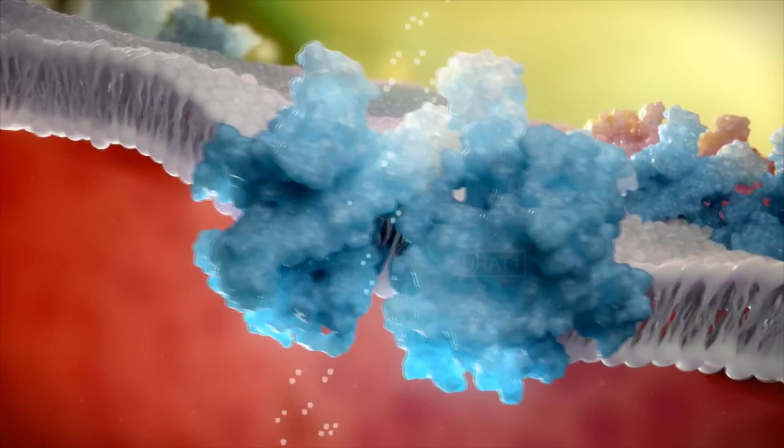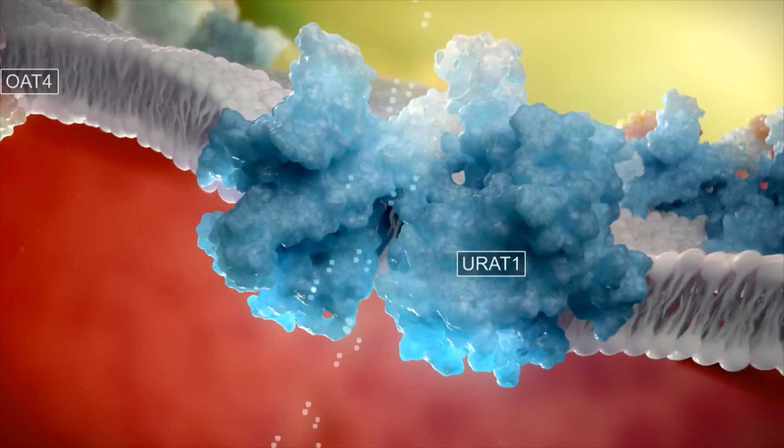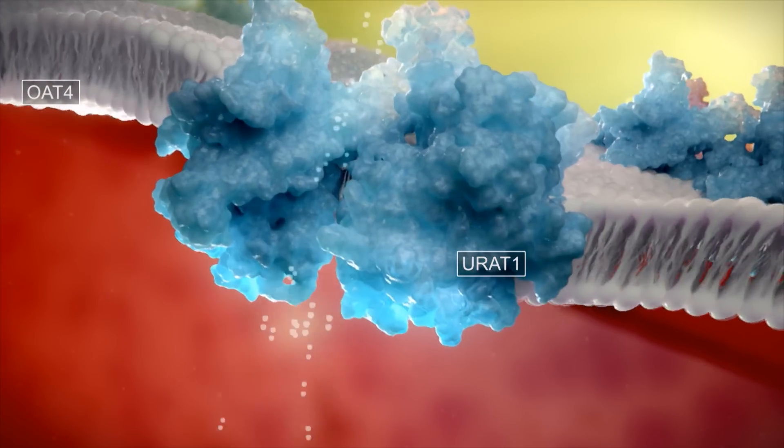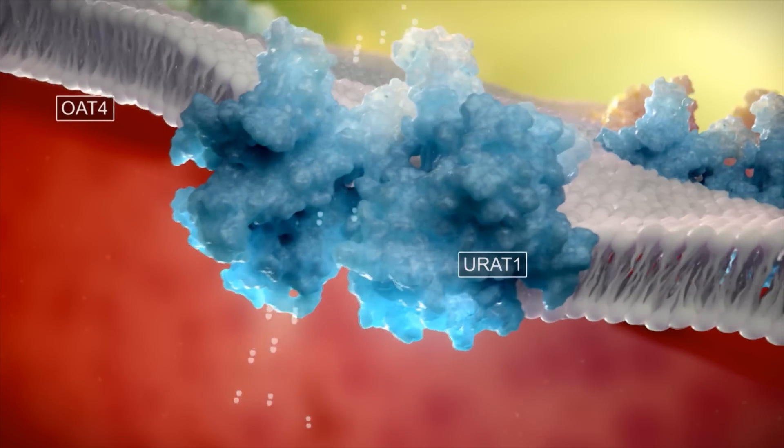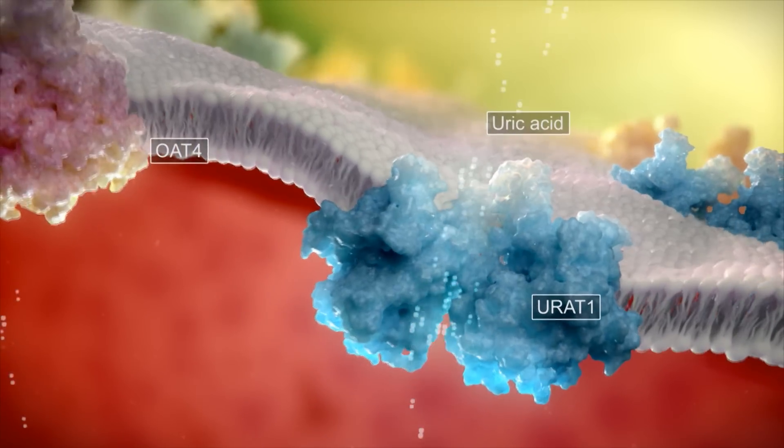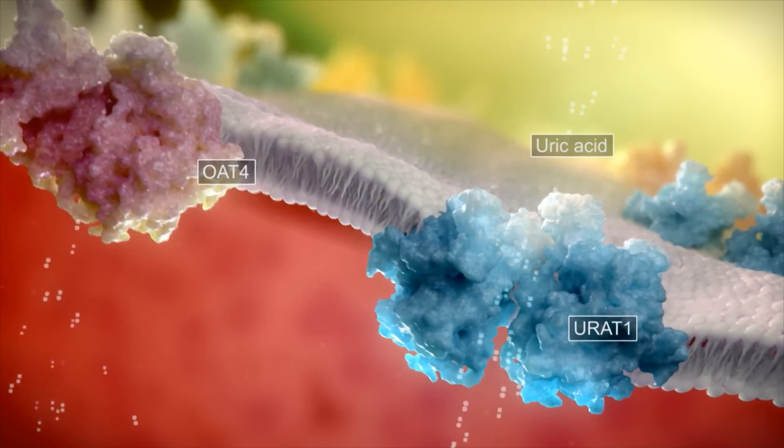Multiple transporters, including URAT1 and OAT4 in the renal tubule system, are involved in uric acid reabsorption. URAT1 is one of the major transporters in the renal proximal tubules and reabsorbs most of the filtered uric acid from the lumen, thus maintaining overall uric acid homeostasis.